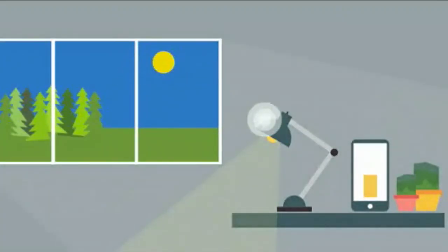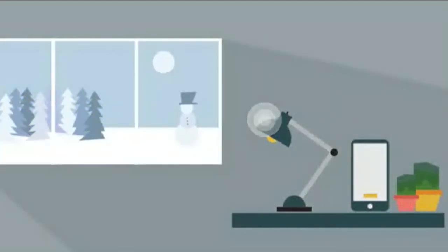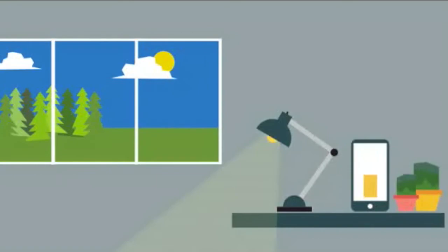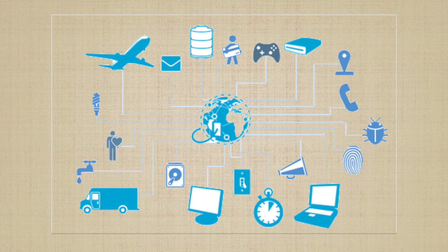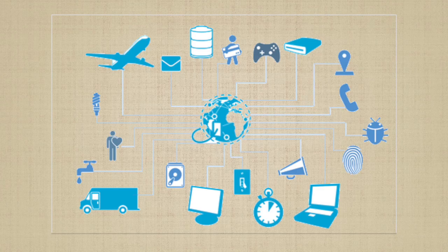The Internet of Things is the interconnection via the Internet of computing devices embedded in everyday objects, enabling them to send and receive data. IoT systems and applications consist of one or more of the following key technologies: